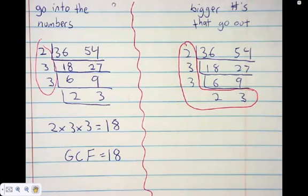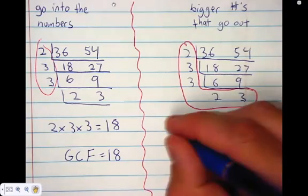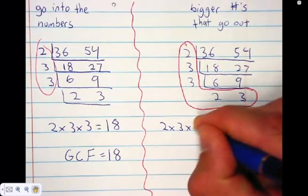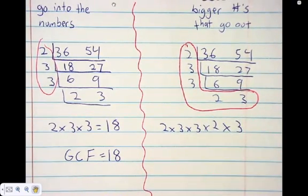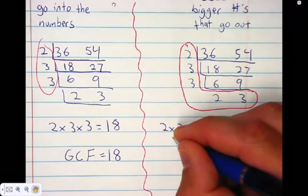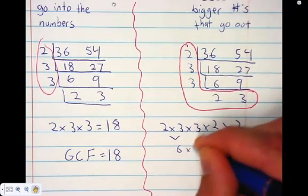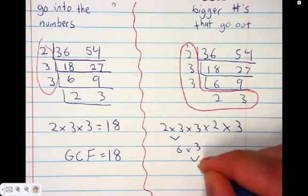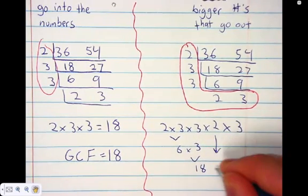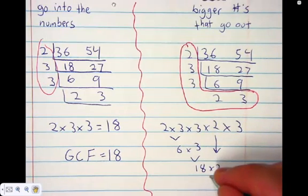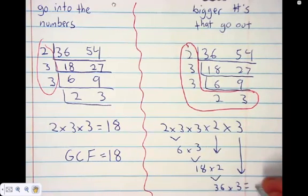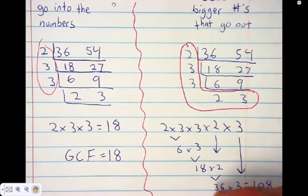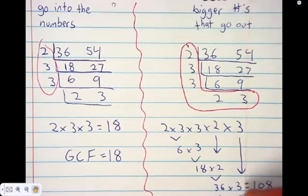Now we multiply all of these together: two times three times three times two times three. Two times three is six, times three is 18, times two is 36, times three is 108. So the LCM is 108.